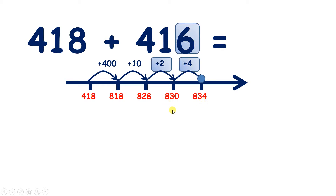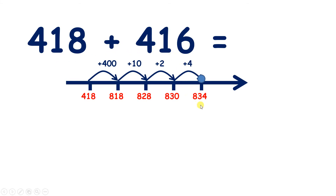So we added our units by bridging — we added two to get to the next multiple of ten, and then we added four more, so we added six altogether. So four hundred and eighteen plus four hundred and sixteen equals eight hundred and thirty-four.